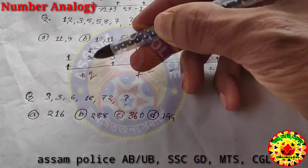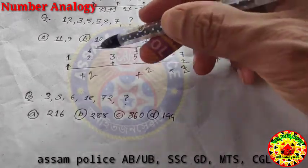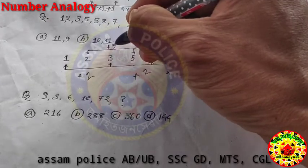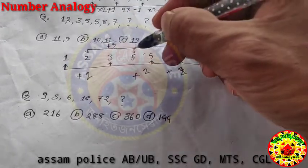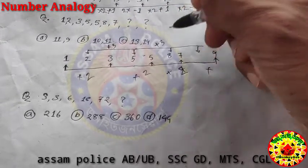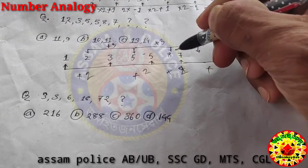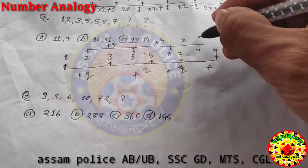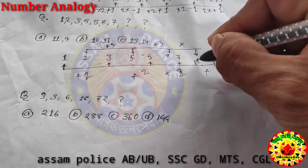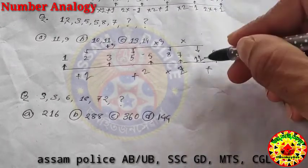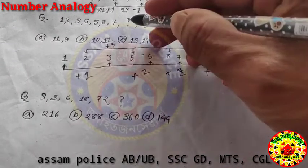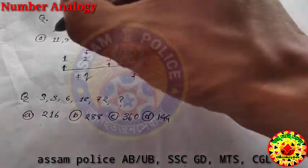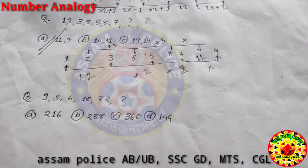Looking at this: 5 plus 3 gives 8. Then 8 plus 3 gives 11. So the pattern gives us 11 as the answer. The correct option is 11. That is the right answer for question two.